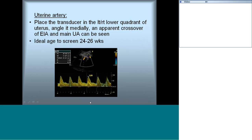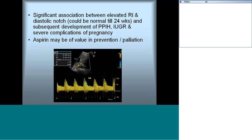The last Doppler study is the uterine artery, obtained at the right and left iliac fossa — it runs perpendicular to the external iliac artery. With the probe parallel to the inguinal ligament over the iliac fossa, the uterine artery is visible. The ideal age to screen is 24 to 26 weeks and both sides should be screened separately. Normal flow shows systolic and continuous diastolic flow. A diastolic notch — a dip during diastole — indicates increased resistance index in the uterine artery and suggests the baby may develop IUGR or severe complications of pregnancy.